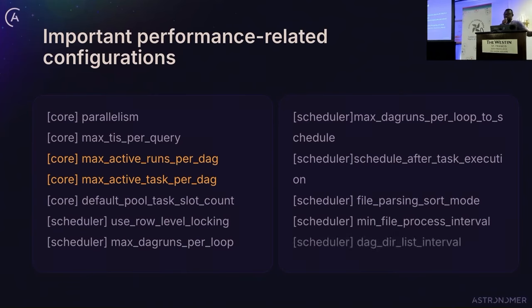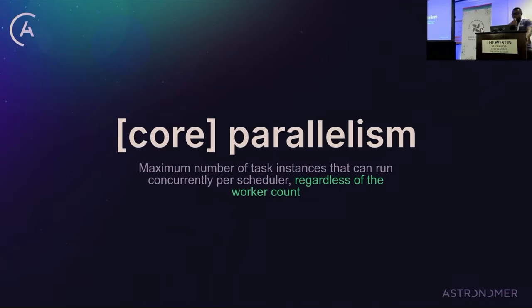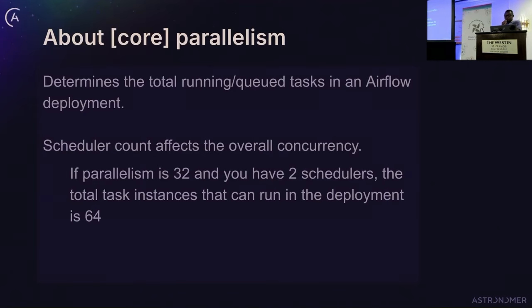We are not going to talk about other things, just the configuration options — specifically not max active runs per DAG and max active tasks per DAG, but other options we'll cover in more detail. Starting with core parallelism: this represents the maximum number of task instances that your Airflow system can run per scheduler, regardless of worker count. If you set it to 32, the total running and queued tasks in Airflow will not exceed 32.